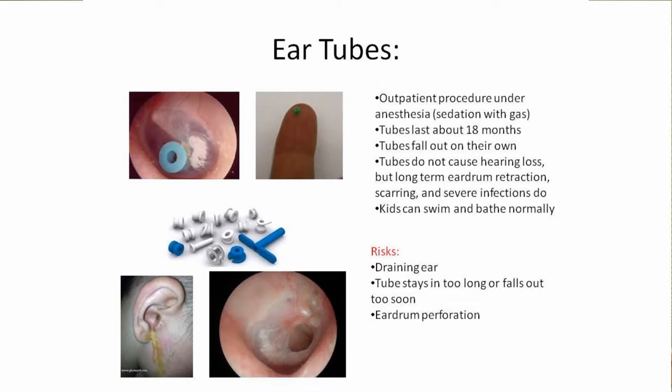Sometimes the tube comes out and the eardrum doesn't heal — you get a hole in the eardrum. That's very rare and almost always occurs in kids who've had multiple sets of tubes or have ongoing problems with chronic infections or ongoing negative pressure. If that's the case, there are a few quick patches we can try — gas anesthesia, 15-minute procedures. If those don't work, they'd need a formal eardrum repair, which I wait until school age when the child can hold still and communicate well.